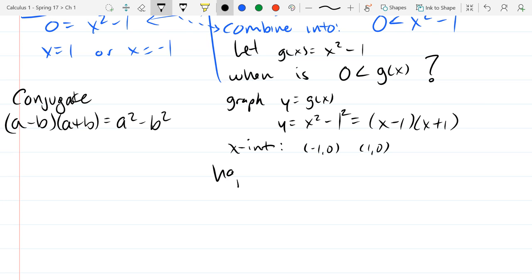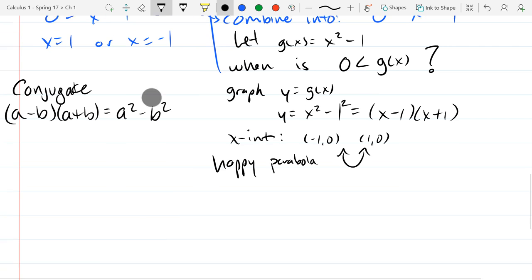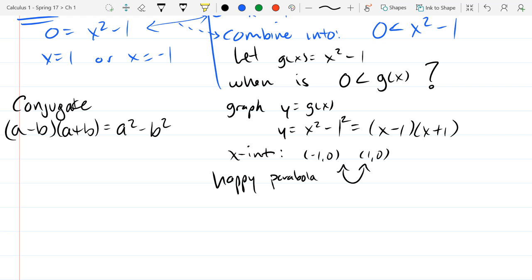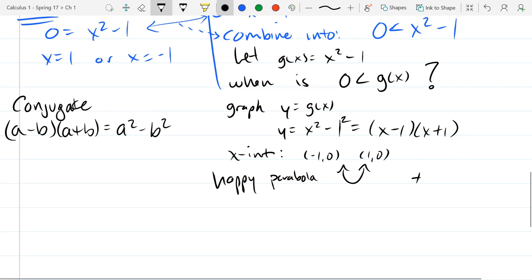It's a happy parabola. So it's going to look like this. How do I know it's happy and not sad? It's got a negative in it. What does that minus 1 do to the graph? It's going to be a shift. Is it horizontal or vertical? It's going to be a vertical shift. So we've got a regular x squared function and we're going to shift it down 1.